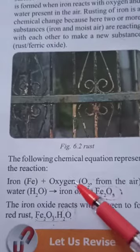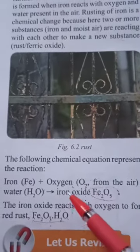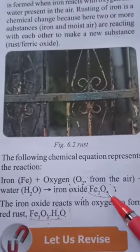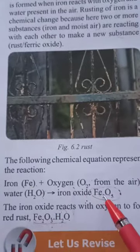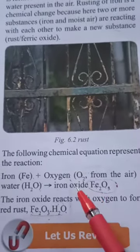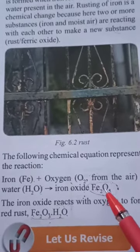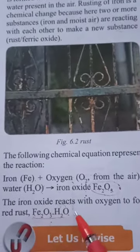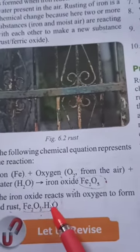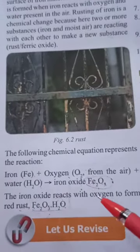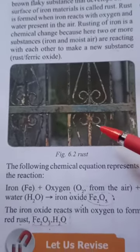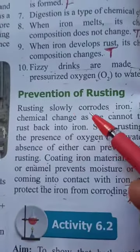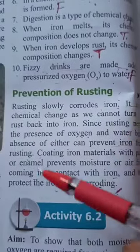Previously, iron in its pure form combines with oxygen and water to form iron oxide. First, iron reacts with oxygen to form iron oxide, and then iron oxide reacts with water to form rust. You can see its chemical structure is totally changed, so this is an example of chemical change.